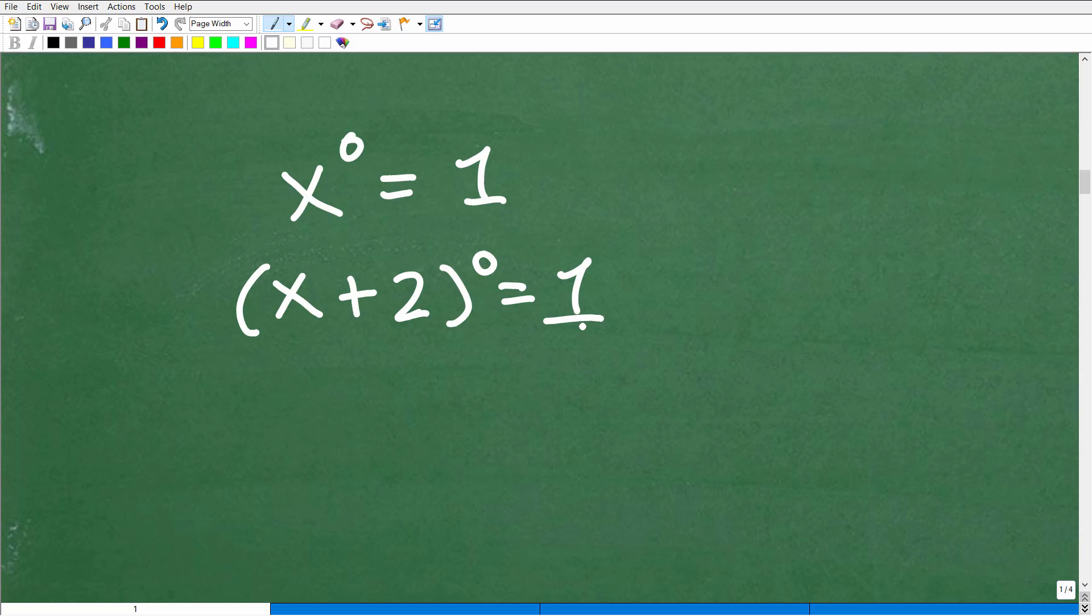x plus two to the zero power, what's that going to be equal to? One. No problem. What if I end up with a situation like this? It's zero over y plus one. Zero over y plus one. What's that equal to? Well, zero is in the numerator.